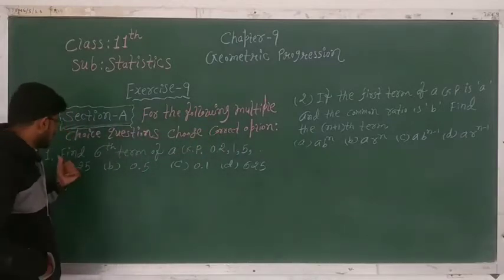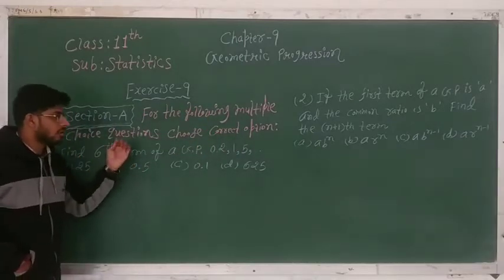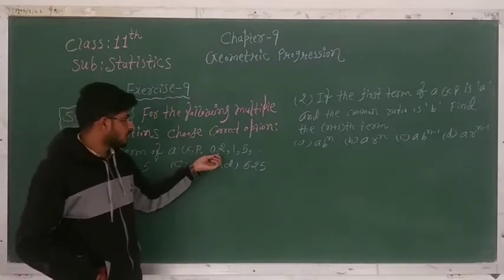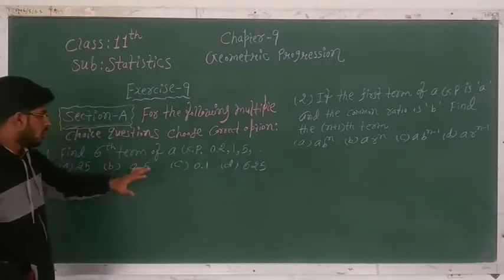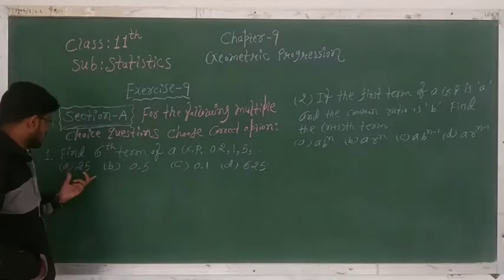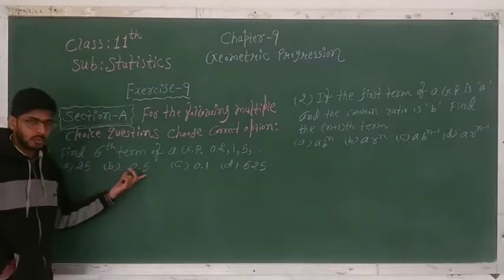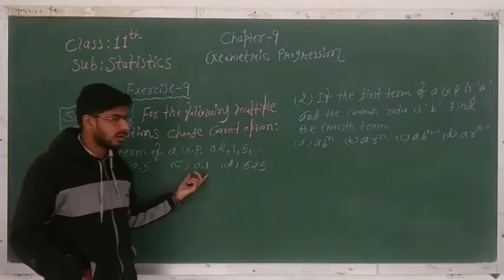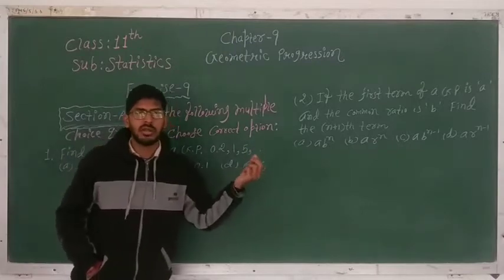Question 1: Find the sixth term of the GP: 0.2, 1, 5, and so on. The options are: A) 25, B) 0.5, C) 0.1, and D) 625.